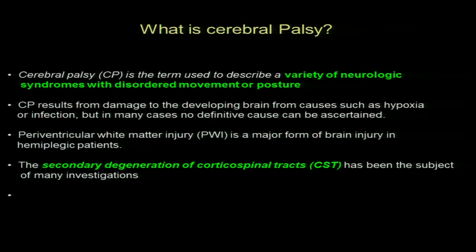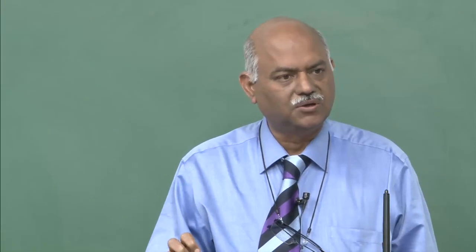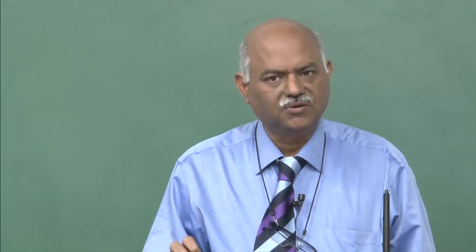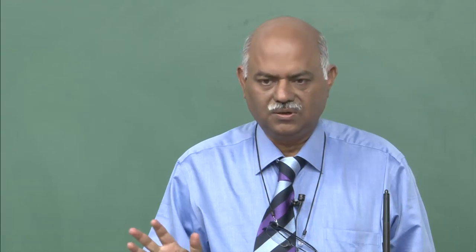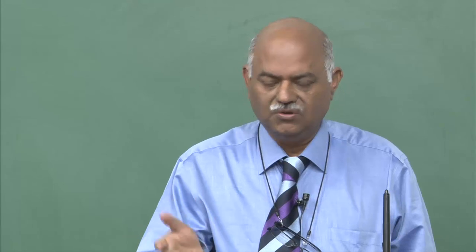Cerebral palsy is a term used to describe a variety of neurological syndromes with disorder of movement or posture. It depends on which area of the brain is affected. If the cortex is affected, they develop seizures and mental decline. If the white matter tracts are affected, they classically develop motor dysfunction — and we have shown how the sensory involvement precedes motor involvement.